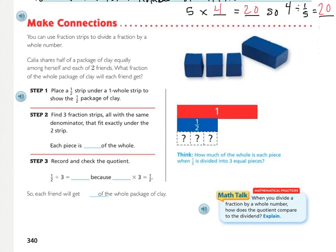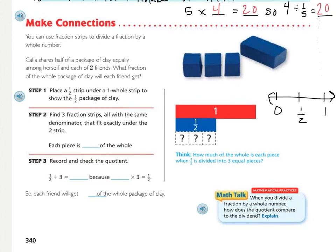Moving on to the make connections. This example, again, is also showing fraction strips, which you can look at right here, but I'm also going to show it on a number line because, again, a number line is a strategy that you can use at any time as long as you have paper and a pencil. So, Calia shares half of a package of clay equally among herself and each of two friends. What fraction of the whole package of clay will each friend get? So first, we're being asked to find what fraction of the whole package will each friend get. And so she starts with a half of a package and then herself and two. So that's going to be three people. So I'm actually going to write a big three there so that I don't forget to count Calia herself.